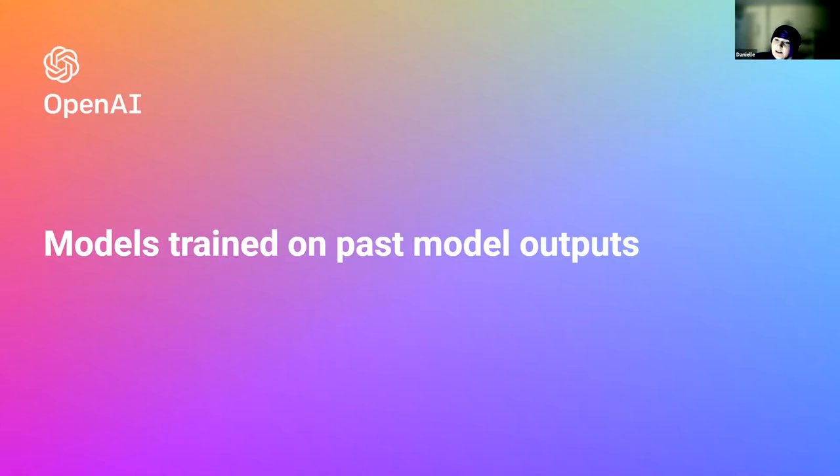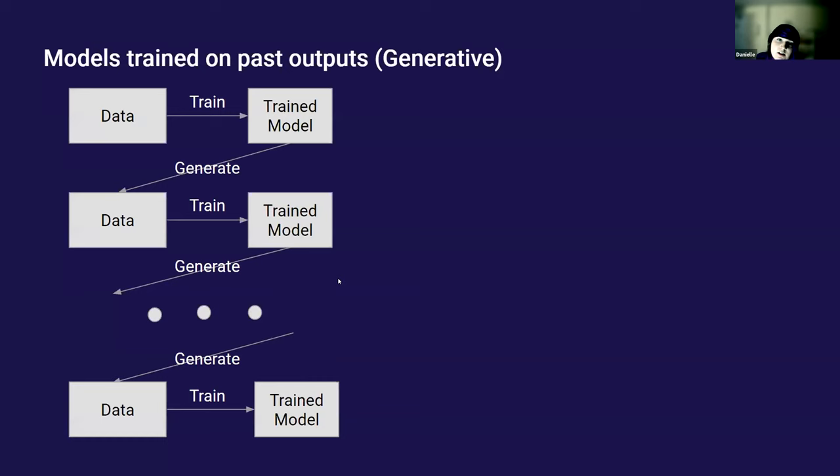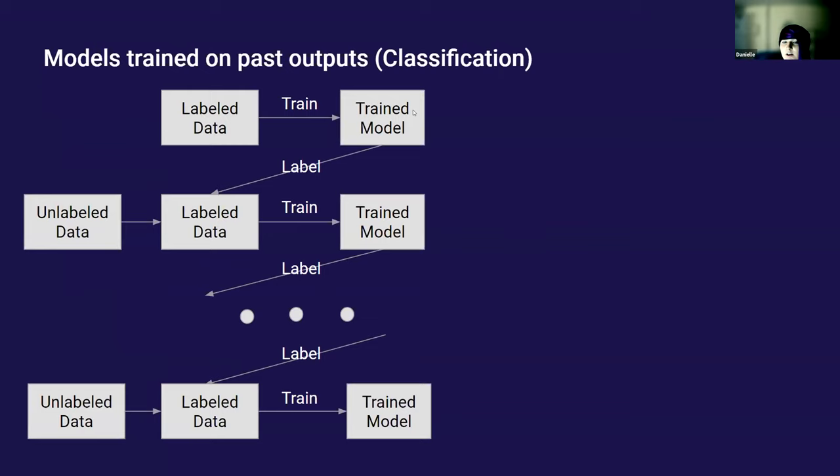Here's the setup: we take some data, feed it into a trained model, generate some data, use that to train another model, generate more data, and repeat. You can imagine variations—maybe fine-tuning the model instead of training from scratch, or maybe we're in a classification setting where we label this data distribution, leading to a trained model.